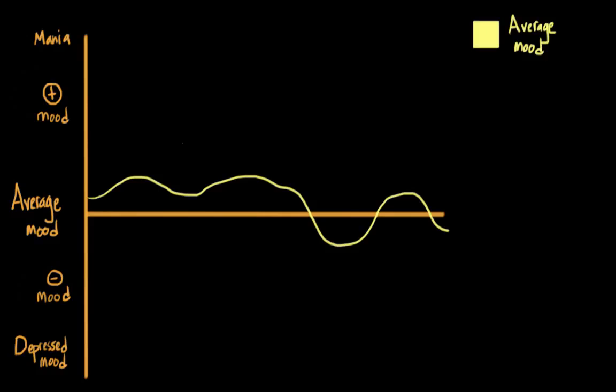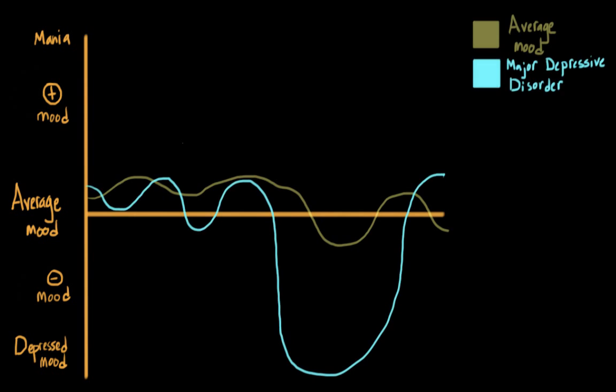So they fluctuate, but they do so within an average range, and they do so as a person interacts with the world around them. Individuals with major depressive disorder might cycle normally through moods a lot of the time, but they will also have periods of intense depression. These are often unrelated to what is going on around them. So these dips represent serious depressive states.